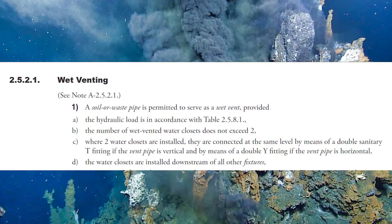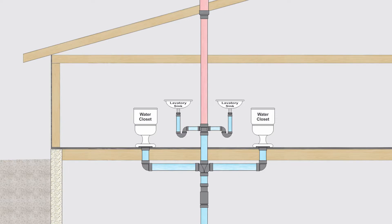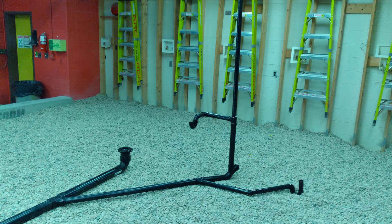Next, clause 2521.1d: water closets are installed downstream of all other fixtures. Simply put, the water closets need to be the last or lowest connected fixtures on the whole wet vented system — whether you have one water closet or two. In this picture, two water closets join into our wet vented soil waste stack and are the last or lowest connected fixtures. In the wet vented bathroom group picture, you'll also notice the water closet is the last or lowest connected fixture in the system.